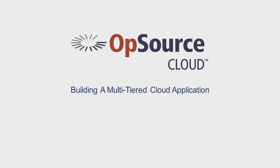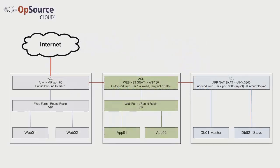We have chosen a three-tiered architecture for our application consisting of a load-balanced web frontend, an application tier which is also load-balanced, and a database tier. We will deploy two servers in our web tier, two servers in our application tier, and two servers in our database tier.